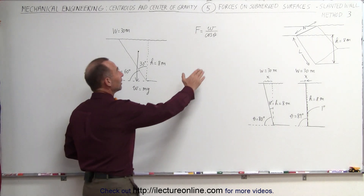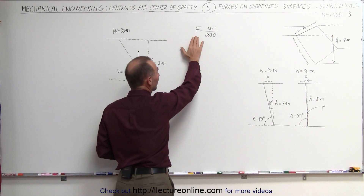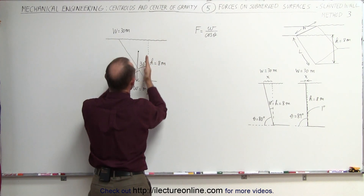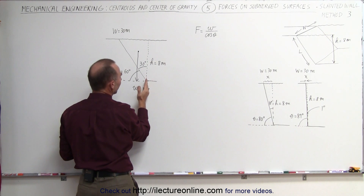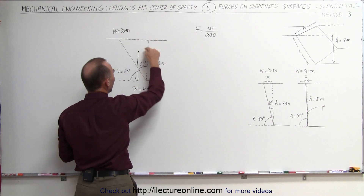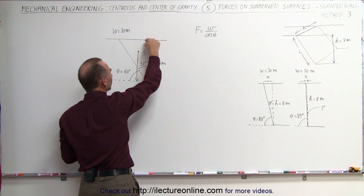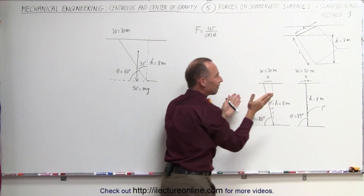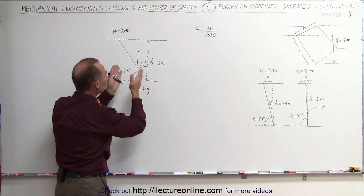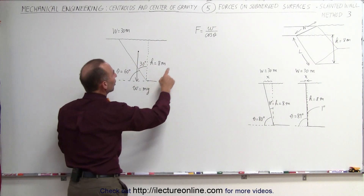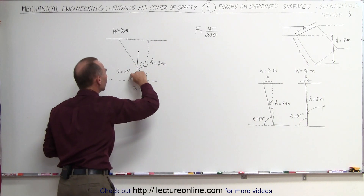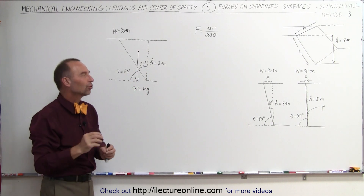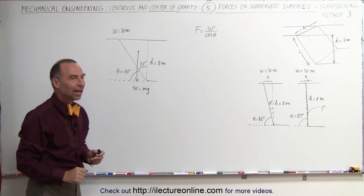The force on the slanted portion of a dam is equal to the weight of the water contained within a wedge. If you go out to the very foot of the slant and draw a line straight up, you have a triangular wedge. The weight of the water in that triangular wedge divided by the cosine of the angle of the slant relative to the horizontal gives you the force against the slanted portion of the dam.